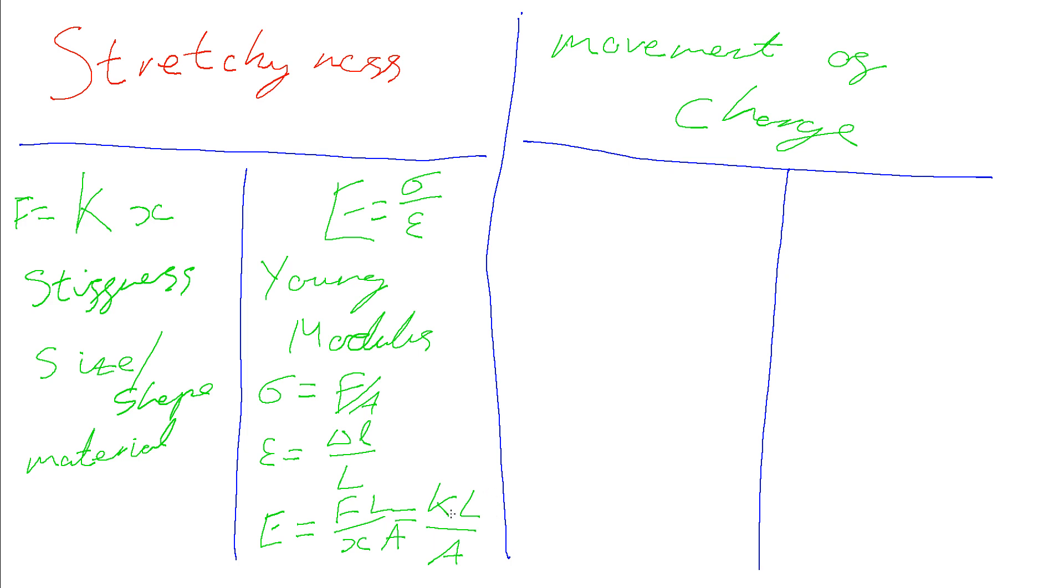So that the Young modulus doesn't change for a given material. It doesn't depend on the size and shape. It's an intrinsic property of the material that we're looking at. So the Young modulus for copper will be fixed regardless of the size or shape. And what we see with resistance and resistivity is something very similar. So we get that the resistivity is RA over L. And so we can see this is the resistance corrected for the size and shape of the particular sample that we're looking at.